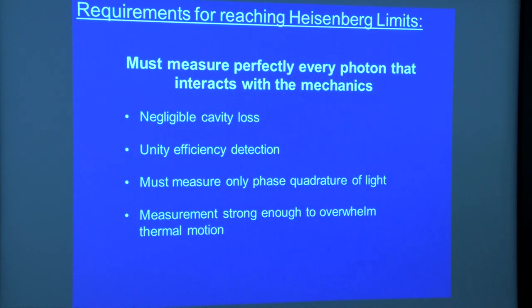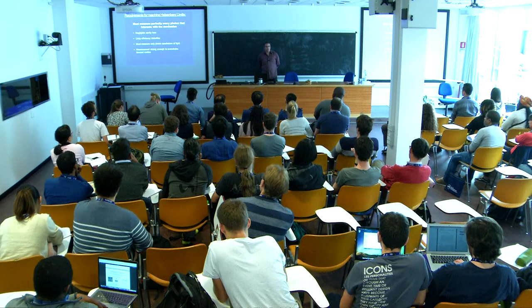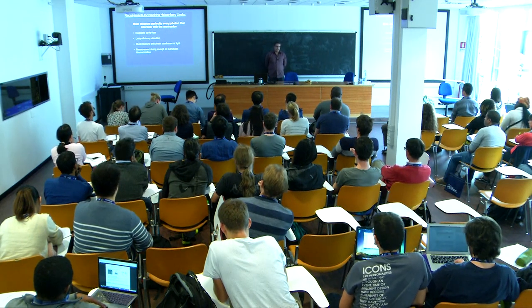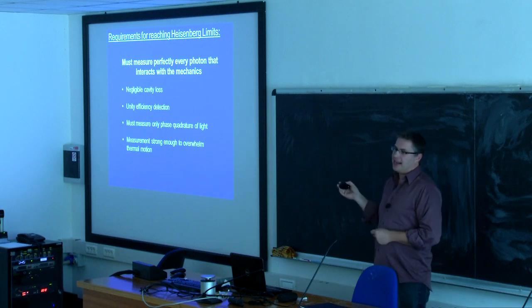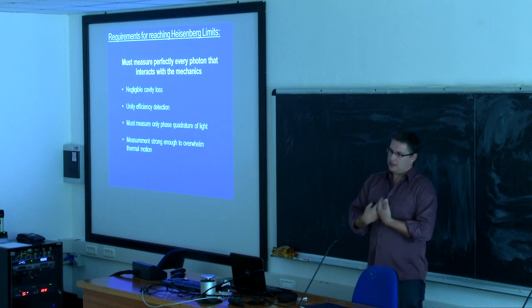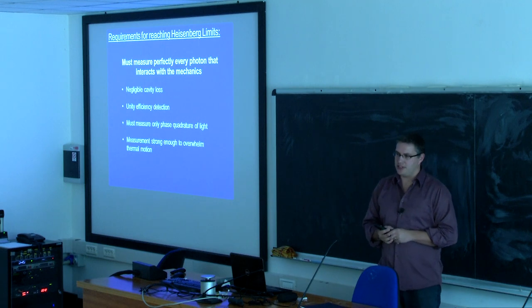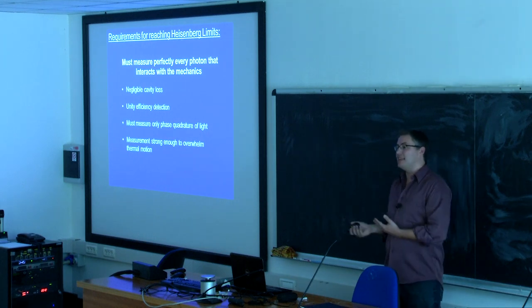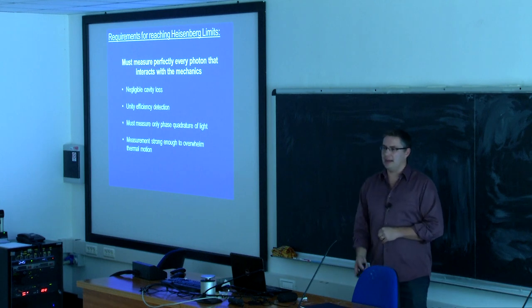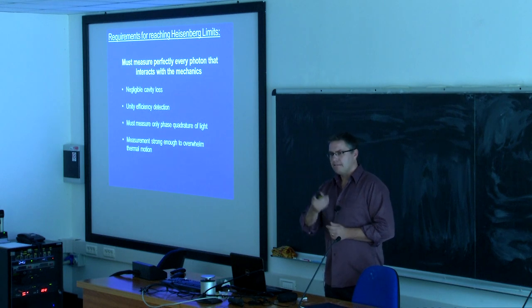You also need to be able to adjust your power so your measurement strength can be strong enough to reach or overwhelm your thermal motion. For 100% efficiency, every photon that interacted with the mechanics in the cavity should make it out of the cavity — 100% overcoupled — all the way to your detector with 100% detection efficiency. Any loss coming out of your cryostat or launching into your fiber would look like inefficiency.